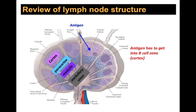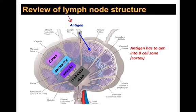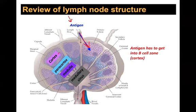Recalling lymph node structure: antigen enters through the afferent lymphatics. The lymph node is divided into three main areas — the cortex (B cell zone), the paracortex (T cell zone), and the medullary region. The medullary sinus is essentially the drain: everything that didn't respond exits via the medullary sinus to the efferent lymphatics. Antigen comes in and eventually drains out via the efferent lymphatics.